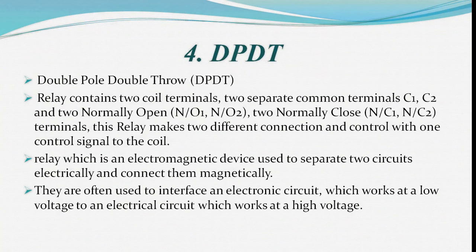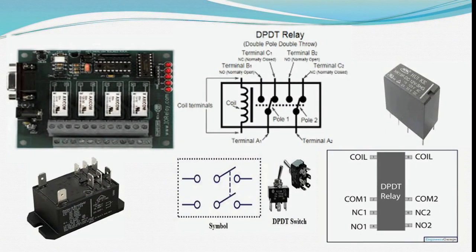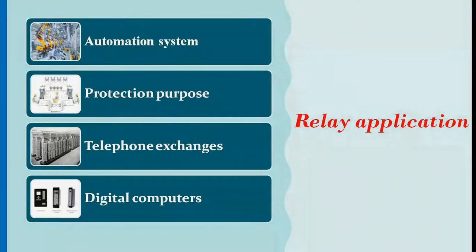A DPDT relay contains two coil terminals, two separate common terminals (C1, C2), two normally open terminals (NO1, NO2), and two normally close terminals (NC1, NC2). This relay makes two different connections and controls with one control signal to the coil. Applications of relays include automation systems, protection purposes, telephone exchanges, and digital computers.